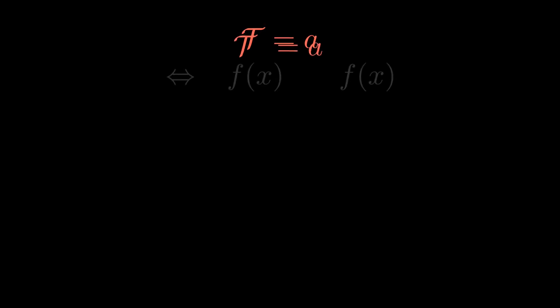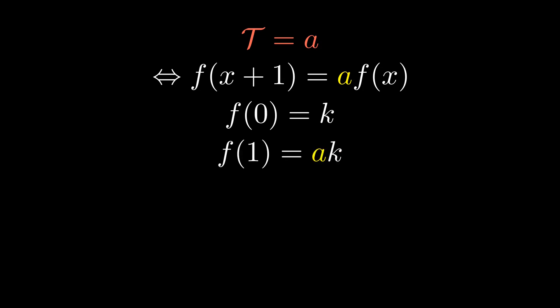First, take the first-order equation T equals a, where a is an arbitrary constant. Whatever the zeroth term happens to be, we know f of 1 will be a times that constant. Similarly, f of 2 will be a squared times f of 0, and so on. So the general form of f of x is a to the x times some arbitrary constant.